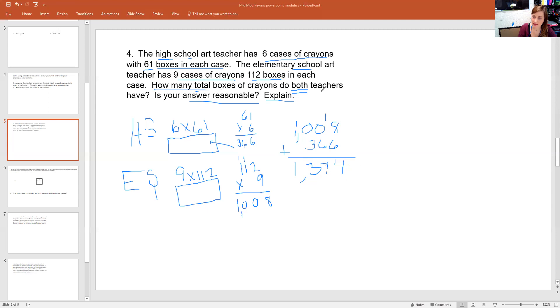But before I can answer the question, it says, is your answer reasonable? Reasonable just means that they want you to estimate and check your answer. So if I was going to estimate, I'd say six times 60, that's pretty close to 61. Six times six is 36. Add a zero. That's 360.